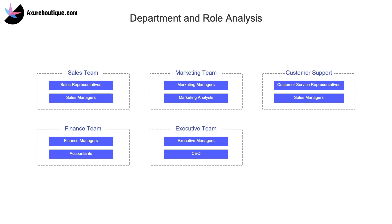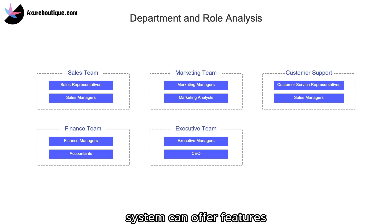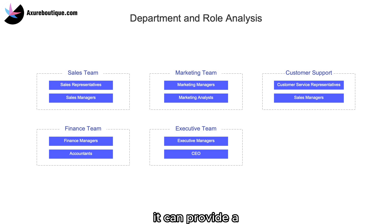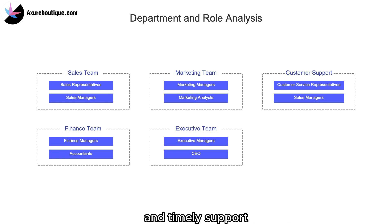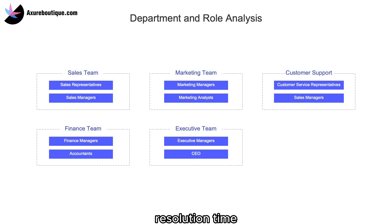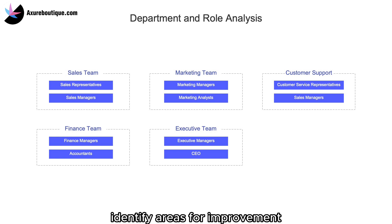Customer service team — Customer service representatives and customer service managers. A CRM system can offer features for efficient customer support and issue resolution. It can provide a centralized database of customer information, including previous interactions and purchase history, enabling representatives to provide personalized and timely support. Additionally, the system can track key metrics such as first response time and average resolution time, helping managers monitor performance and identify areas for improvement.